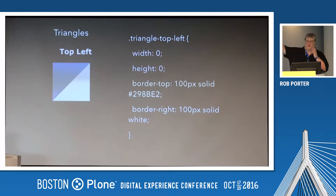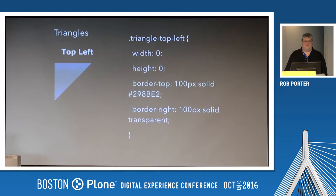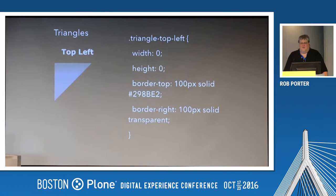The blue color is the one you want, and the main stuff is coming from the top down. So the border top is the blue, and then the border bottom is the white. But when you make it transparent, it looks like that. You would think it was like one level then one level, but that's not how it works.